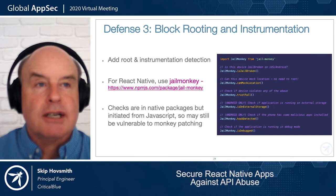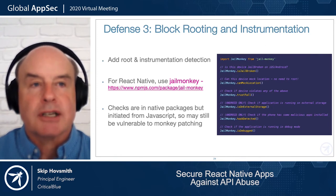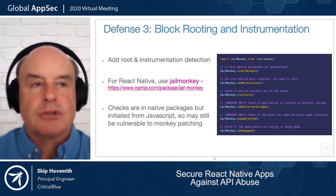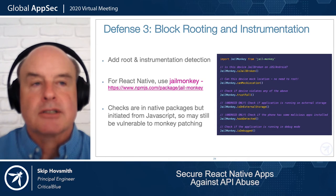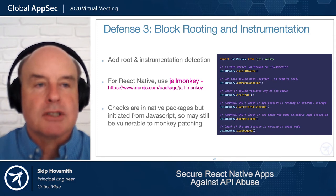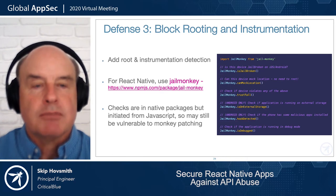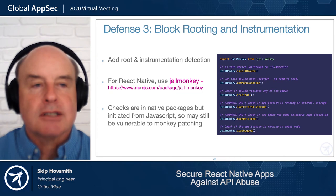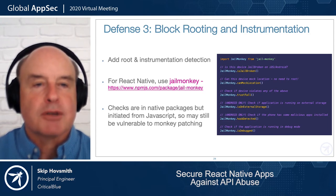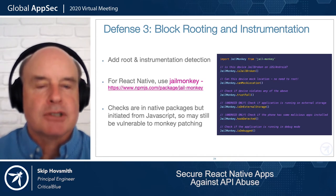To defend against this, the best first defense is detecting rooting or jailbreaking and refusing to run if detected. You can also inspect memory maps for instrumentation package signatures. For React Native, use the JailMonkey npm package — implemented natively, it tells you whether the device appears jailbroken or rooted, serving as a first line of defense. Because these are native packages, they're potentially vulnerable to monkey-patching, but obfuscation makes their signatures harder to recognize.